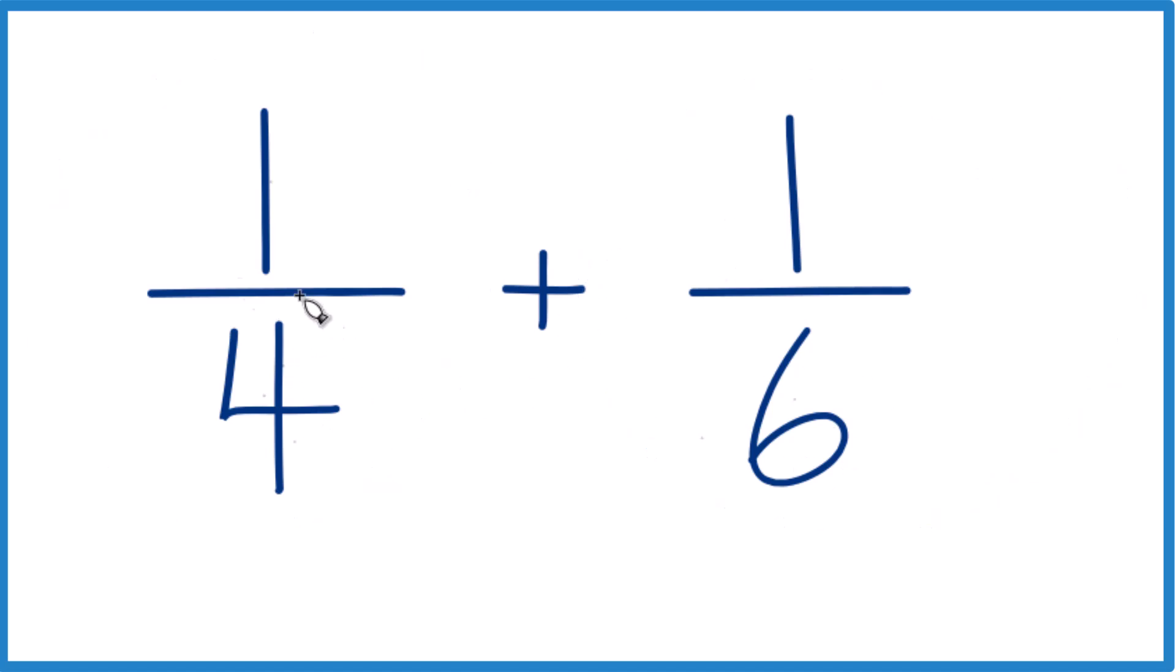What we need to do is find a common denominator. We need to get these numbers here to be the same because then with fractions we just add the numerators and we're done. So let's do this.